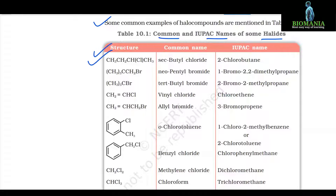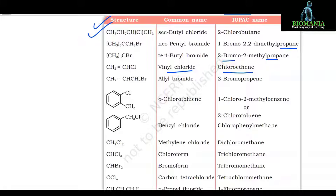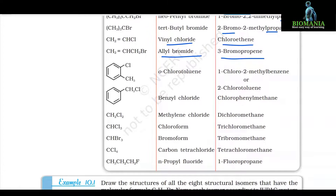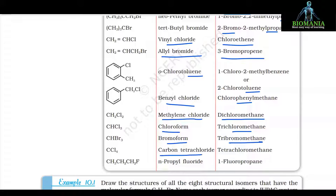Here are the common and IUPAC names of some halides. Secondary butyl chloride, IUPAC name is 2-chlorobutane. Neopentyl bromide, that is 1-bromo-2,2-dimethylpropane. Tertiary butyl bromide, that is 2-bromo-2-methylpropane. Vinyl chloride: chloroethene. Allyl bromide: 3-bromopropane. Orthochlorotoluene, that is 1-chloro-2-methylbenzene or 2-chlorotoluene. Benzyl chloride, IUPAC name is chlorophenylmethane. Methylene chloride, IUPAC name is dichloromethane. Chloroform, IUPAC name is trichloromethane. Bromoform: tribromomethane. Carbon tetrachloride: tetrachloromethane. And N-propylfluoride, its IUPAC name is 1-fluoropropane.